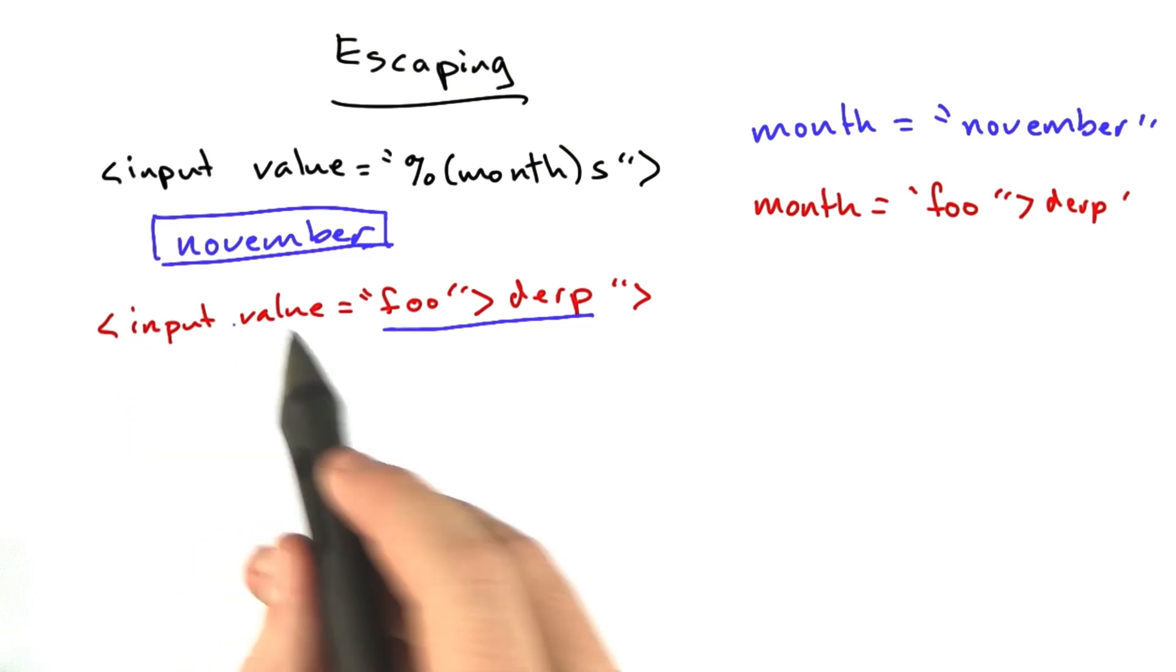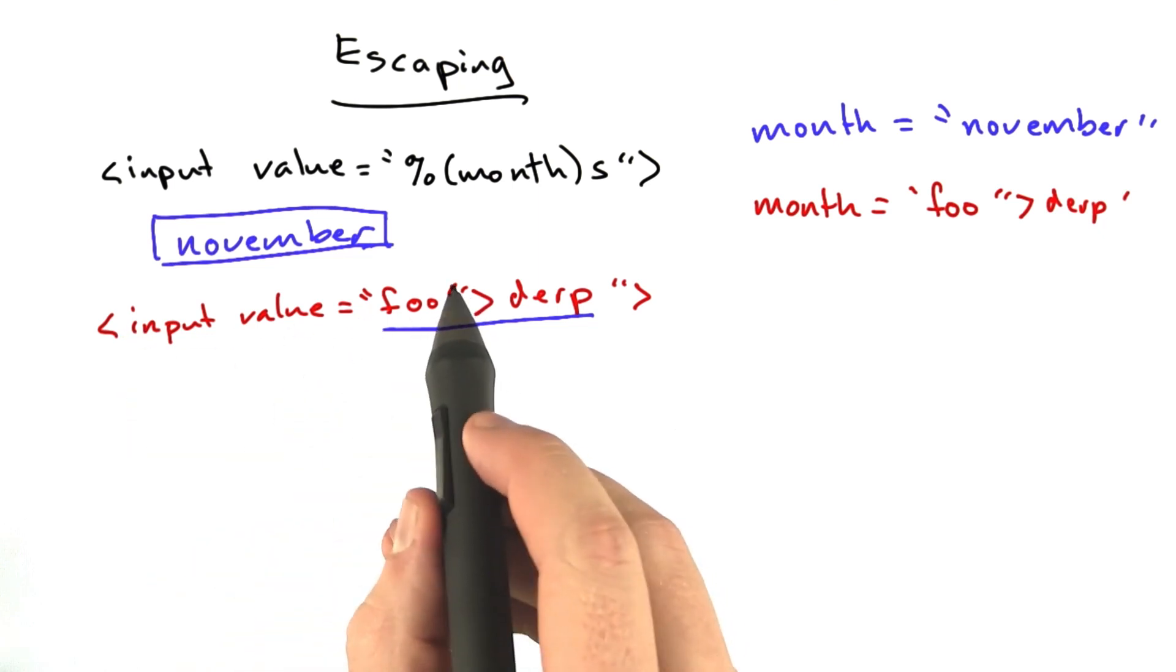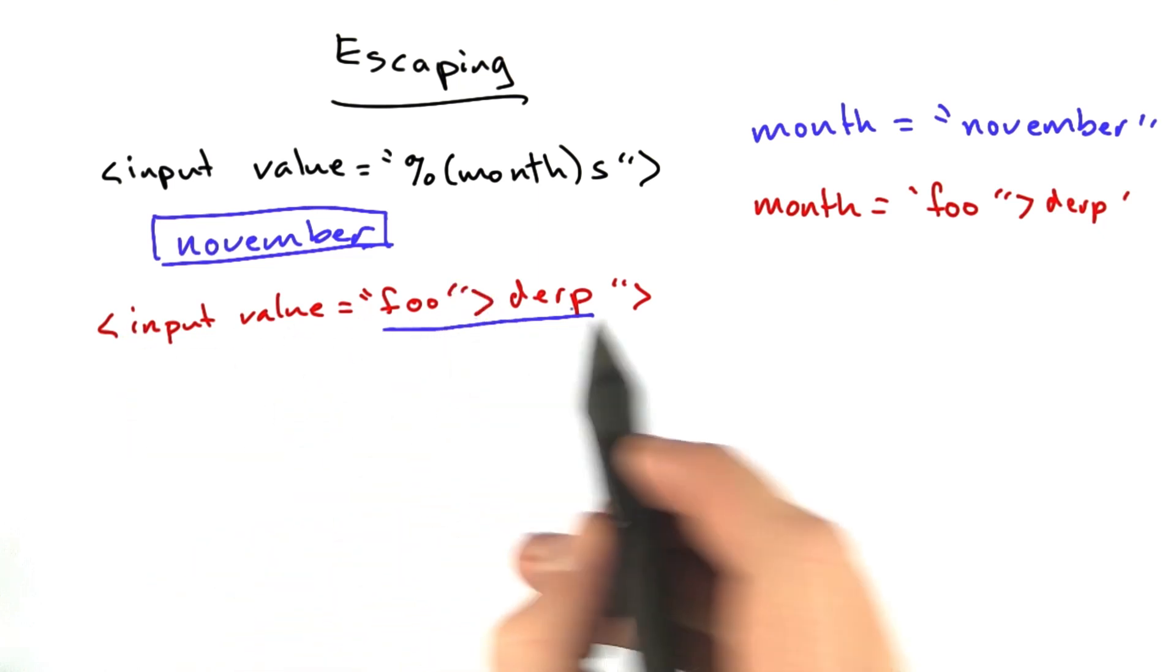So our browser saw this, and it sees an input, and it says value equals foo, and then it sees a closing quote and a closing angle bracket, and it gets this other string derp, and it just prints that.